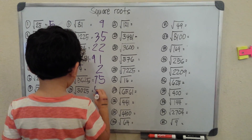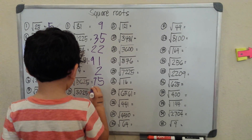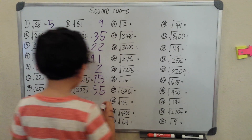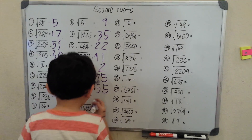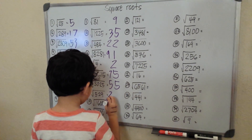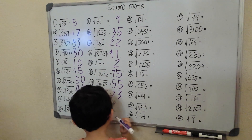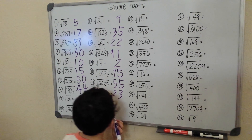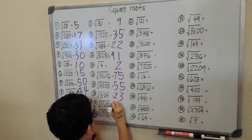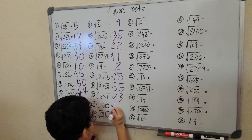Okay, so square root of 3025 will be 55, then square root of 529 is 23, square root of 1600 will be 40.